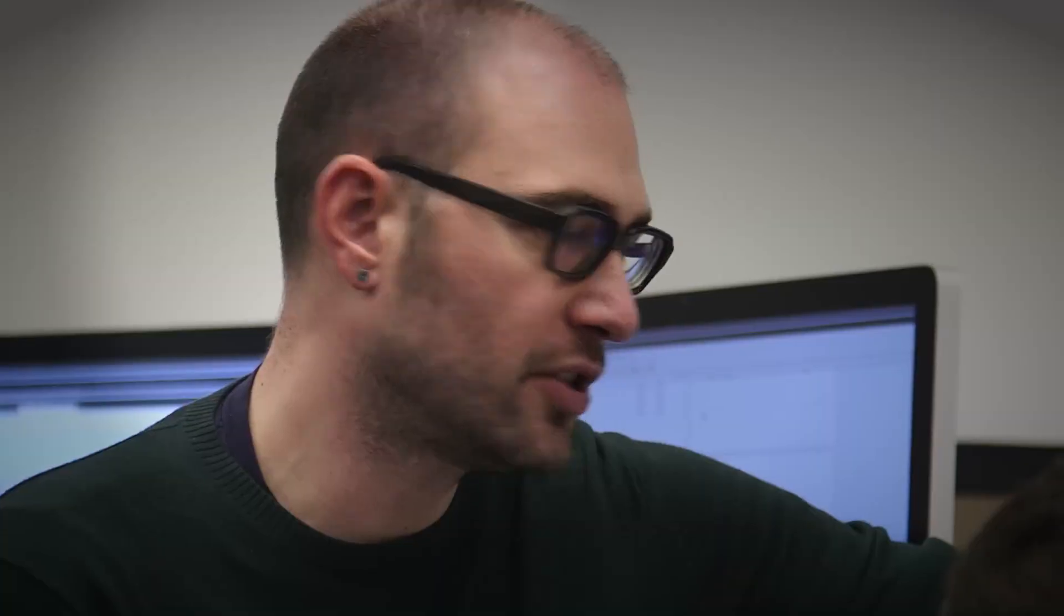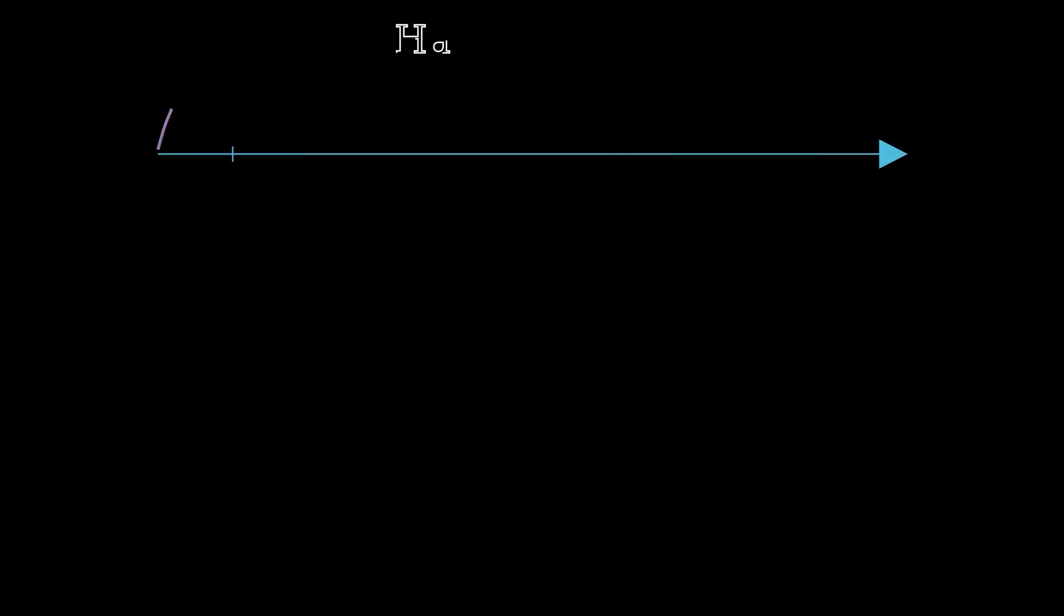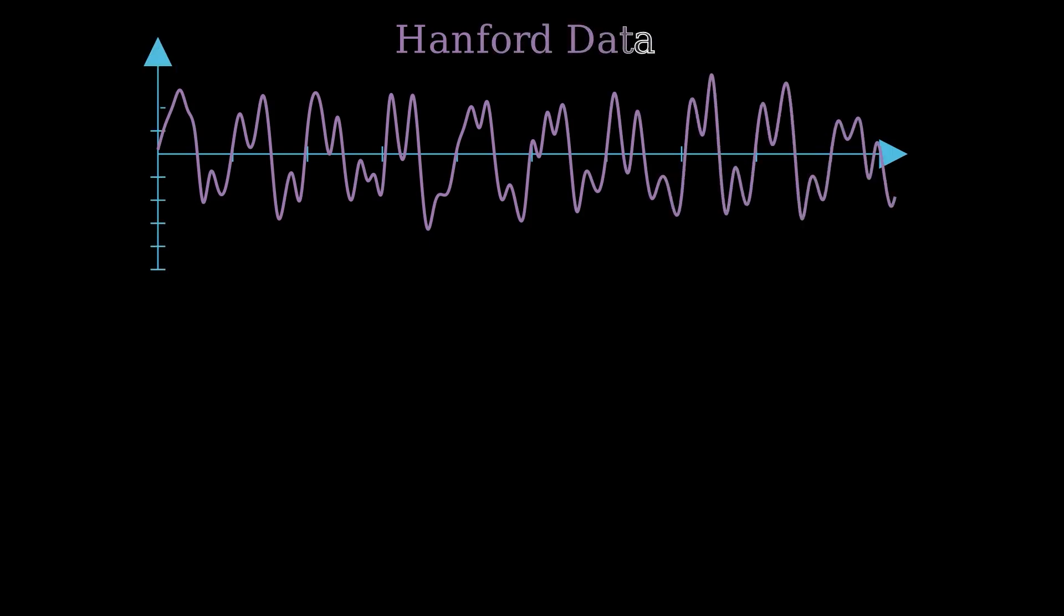Scientists at the two different LIGO labs, Hanford and Livingston, both independently take data and compare the signal they get at every instance in time to the theoretical predictions using matched filtering.